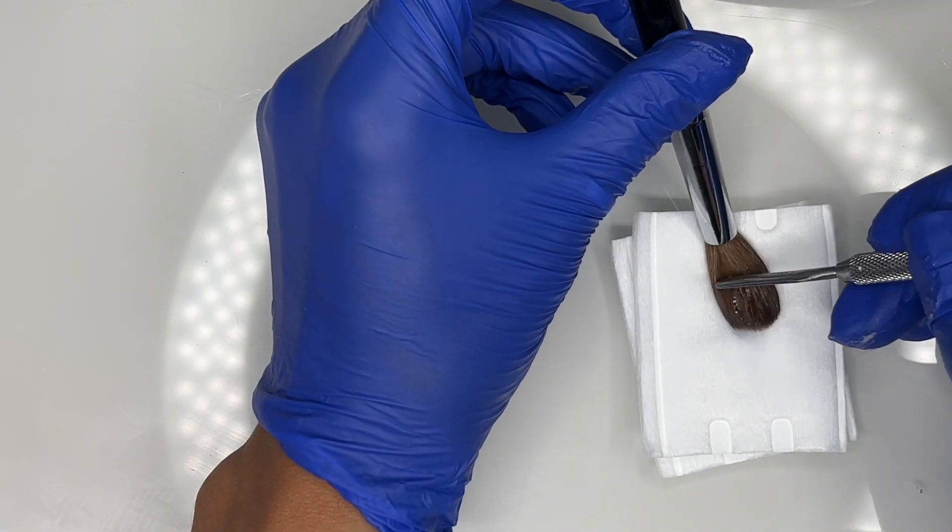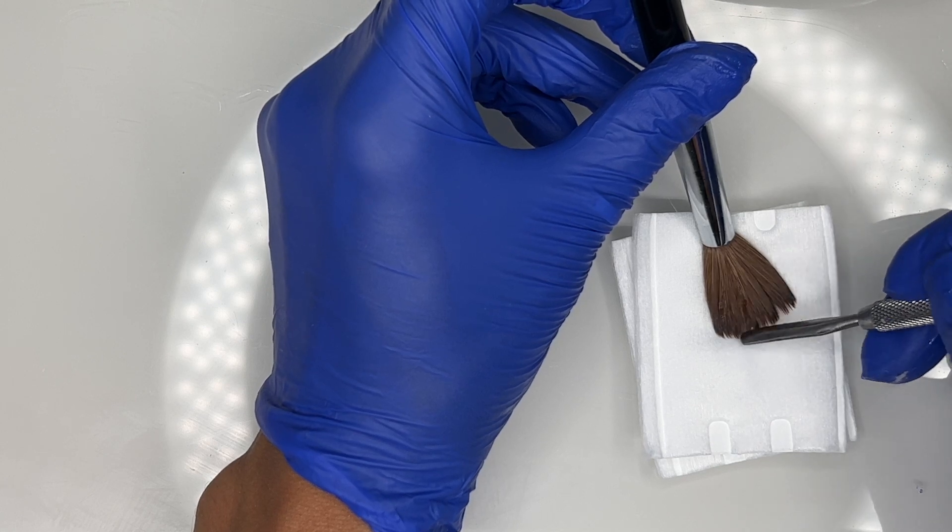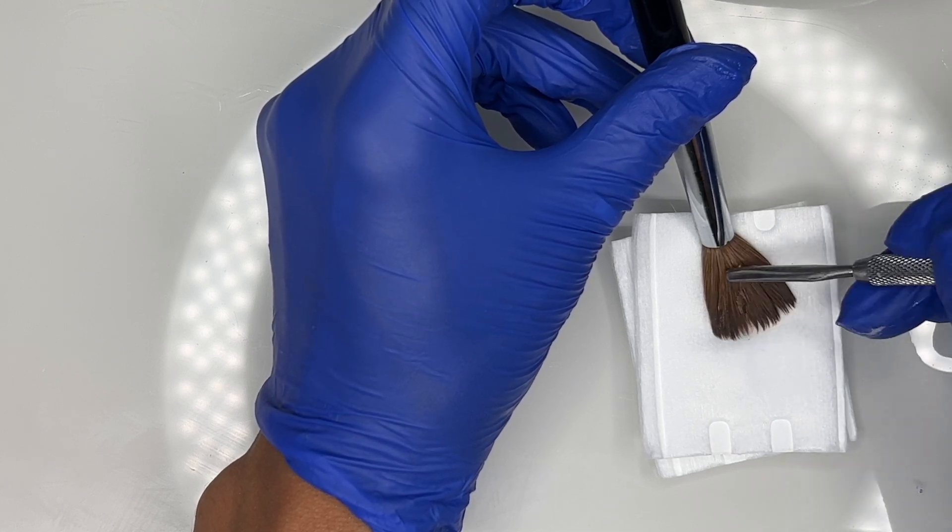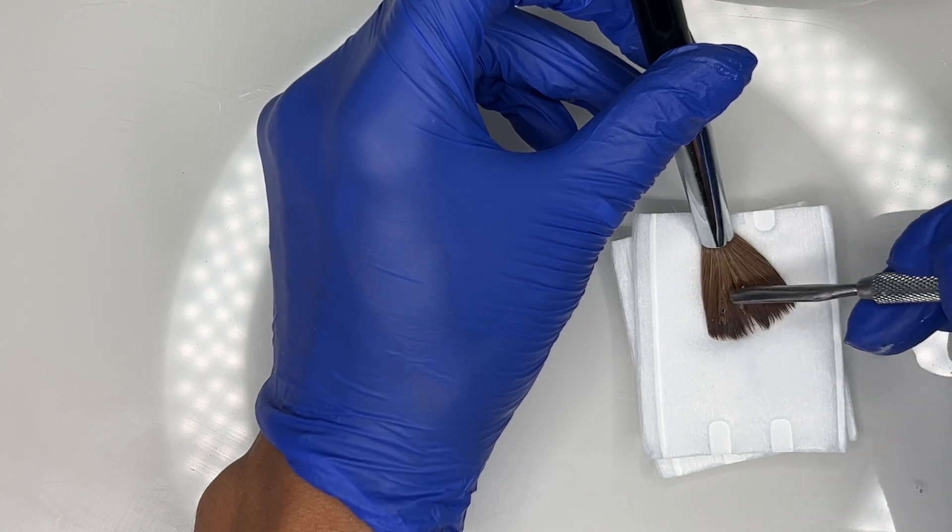Once I see that my brush is ready, I'm taking a cuticle pusher and very lightly scraping that acrylic out of the brush. This acrylic I used had some glitter flakes in it, so I'm also catching those.